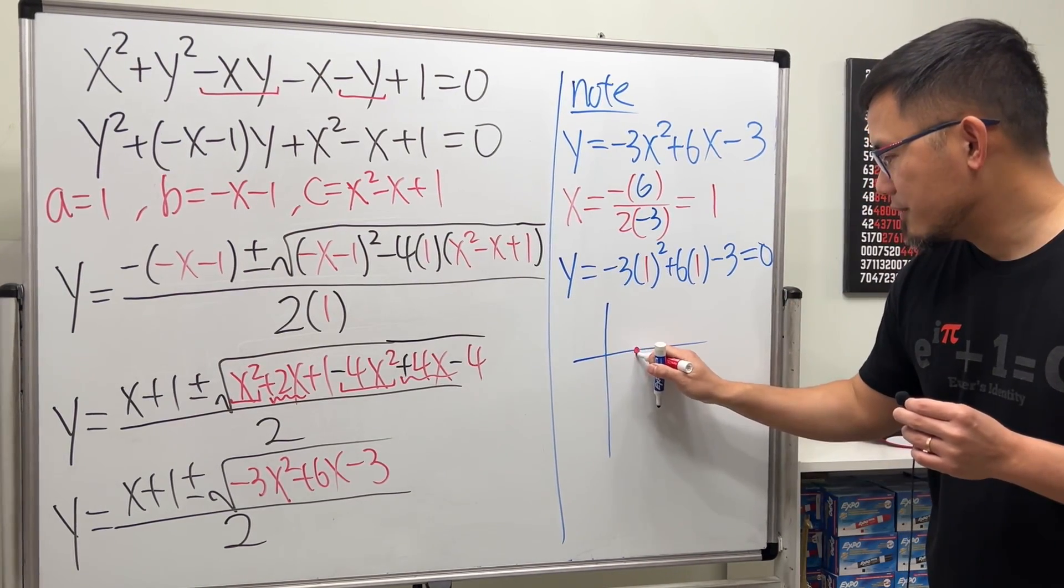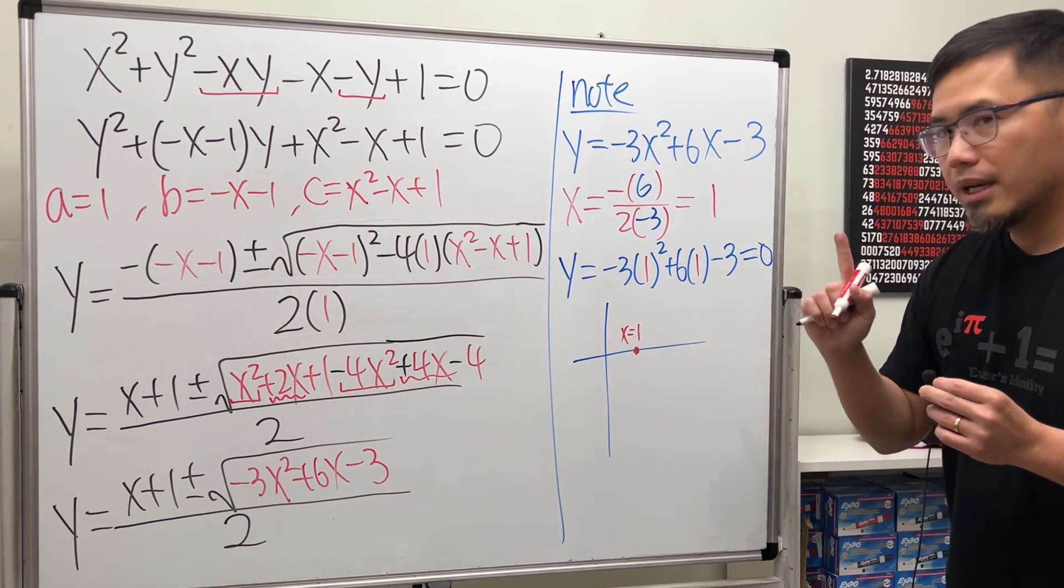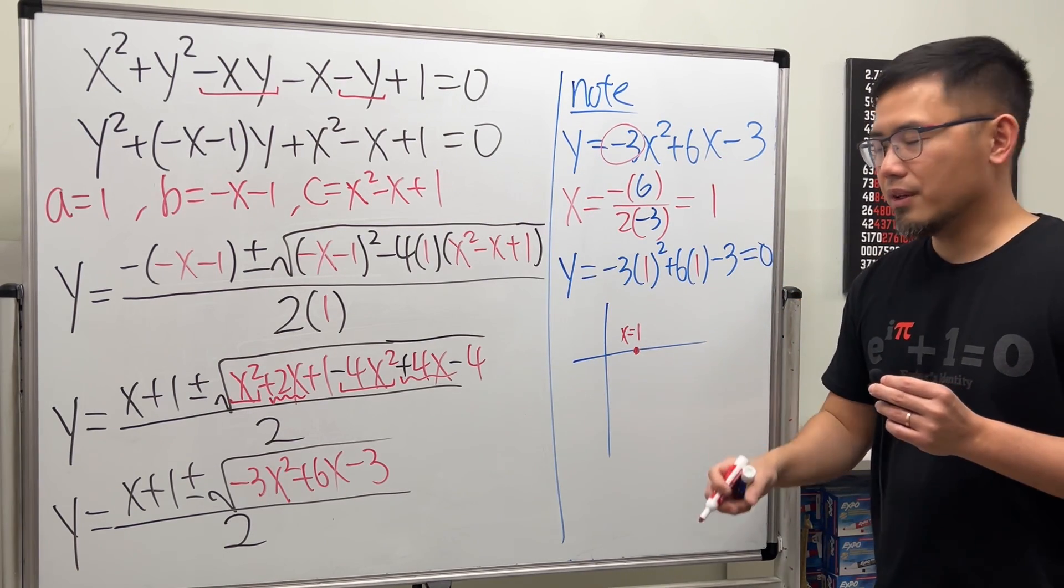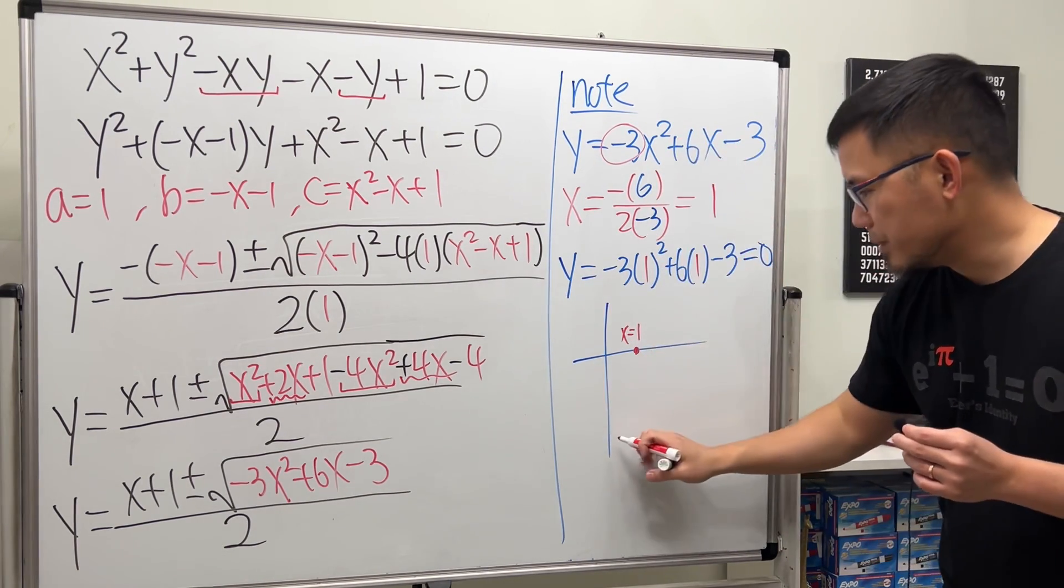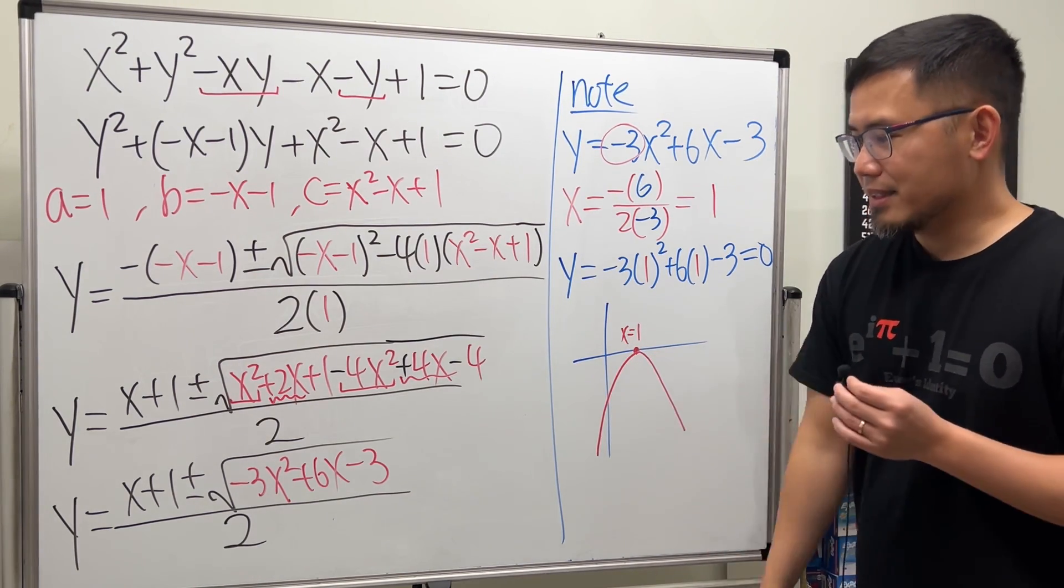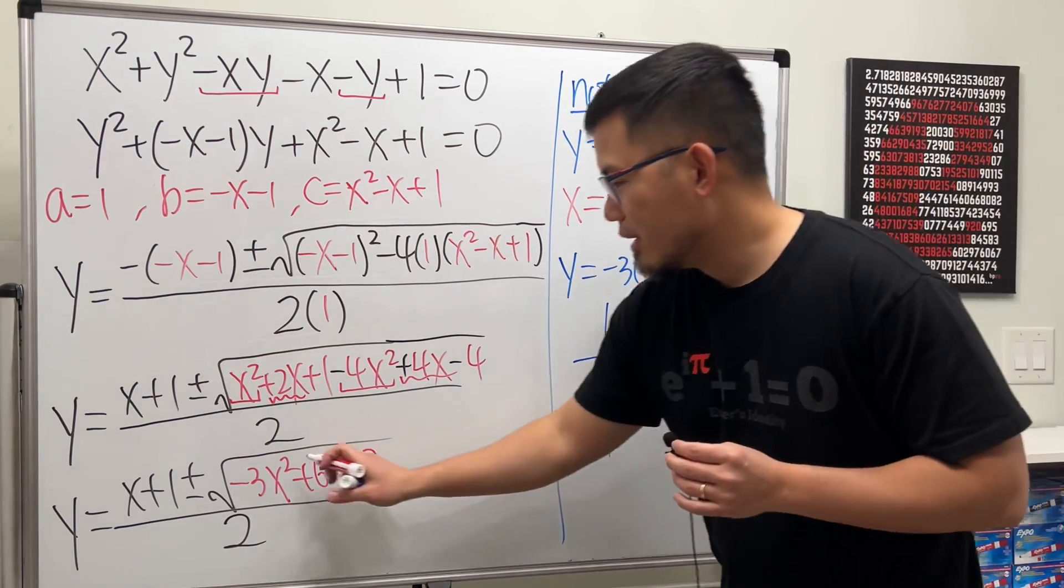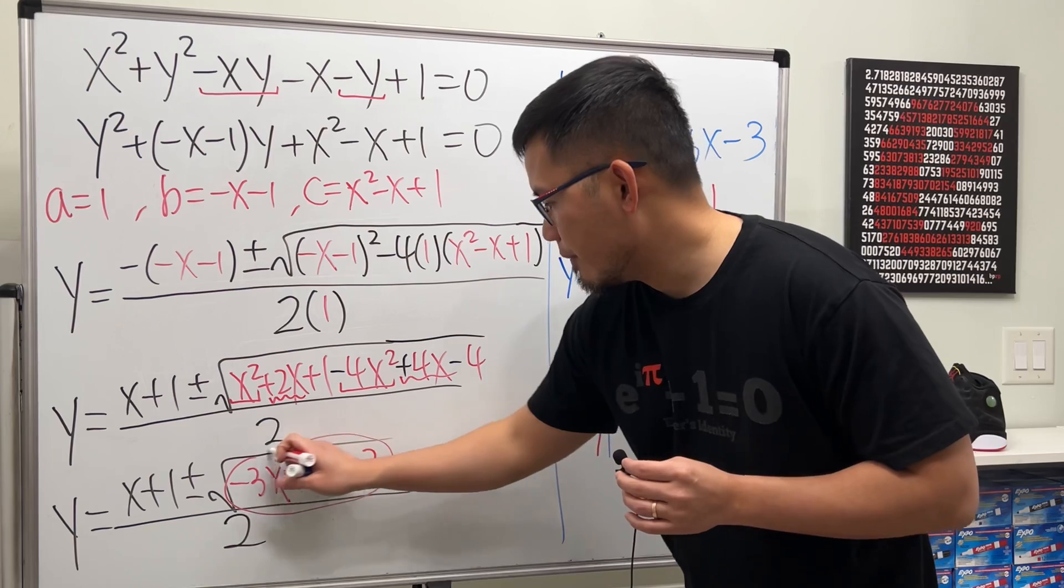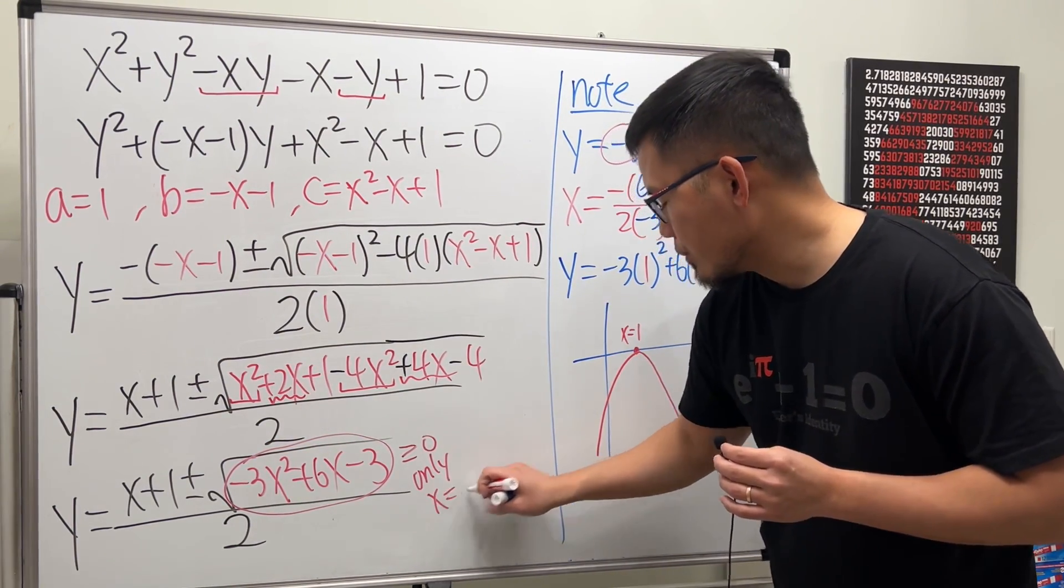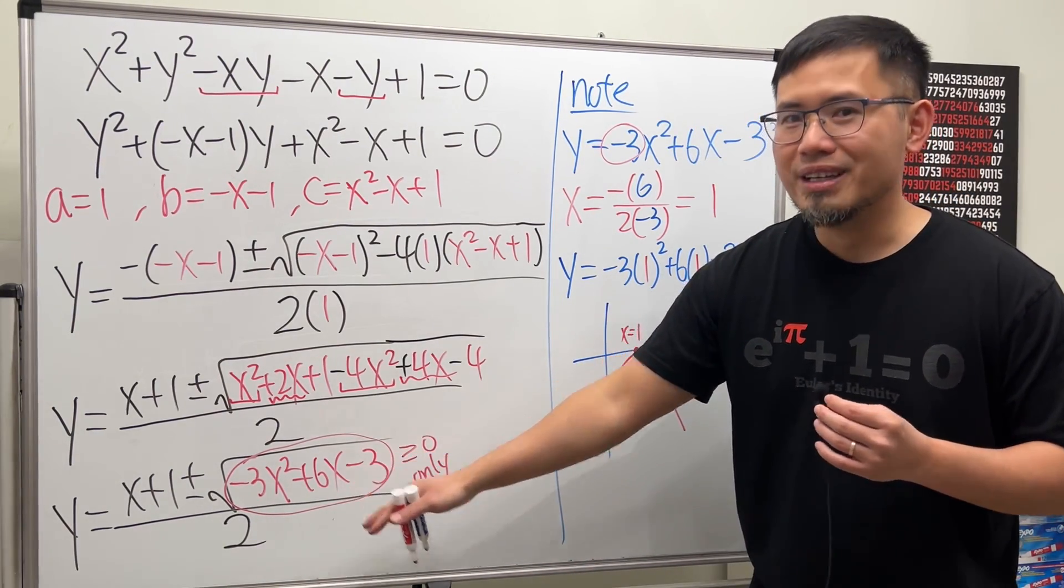So when x is equal to one, y is equal to zero, so we will have a picture like this. Here is the vertex: one comma zero. And now you see that because we know the coefficient of x squared is negative, that means the graph of this will be opening downward like this. So in fact, in order for this to make sense, if you don't want to use complex numbers, this right here is only non-negative only when x is equal to one, because that's the only number that makes this equal to zero so that you can stick with just the real numbers.